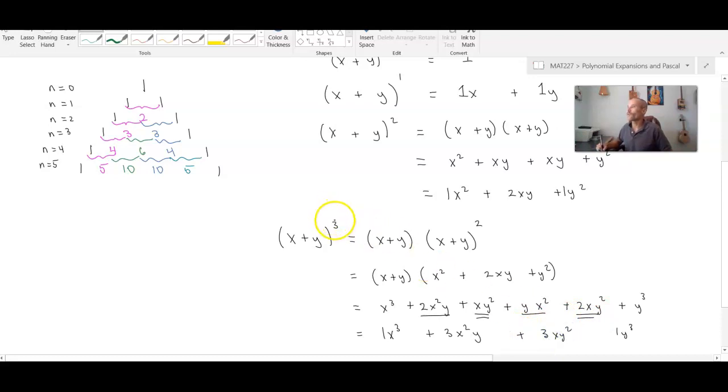And you can see for this power of 3, if I look at the n equals 3 row, you can see that the coefficients here 1, 3, 3, and 1 match the values of Pascal's triangle in row n equals 3.